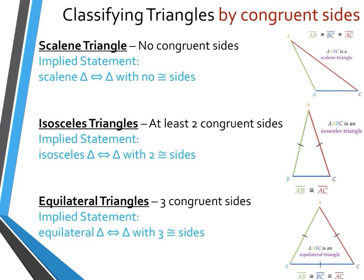Our last classification by sides is the equilateral triangle, which has all three sides congruent, as indicated by all three equal congruent marks. Segment AB is congruent to segment BC, which is congruent to segment AC. The implied statement: if it is an equilateral triangle, then the triangle has three congruent sides.